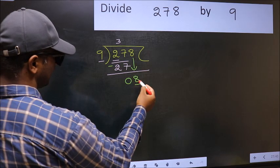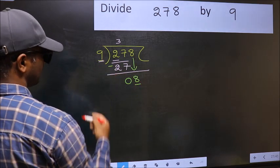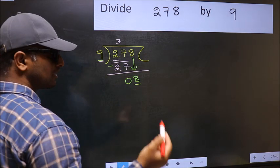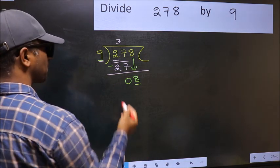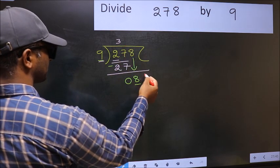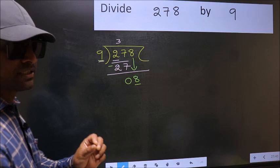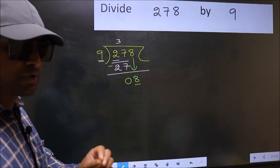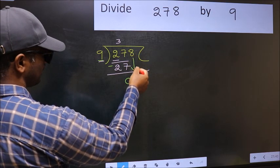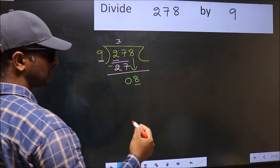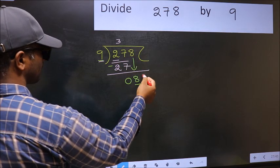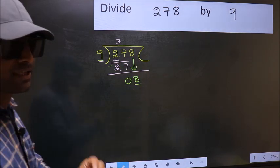Here we have 8 and here 9. 8 is smaller than 9. So what many do is, they directly put dot and take 0, which is wrong. Why is it wrong? Because just now you brought this number down, and in the same step, you want to put dot and take 0, which is wrong.